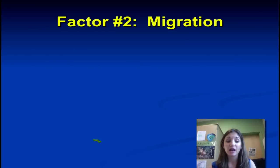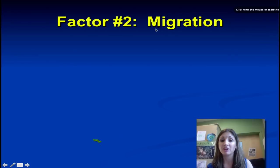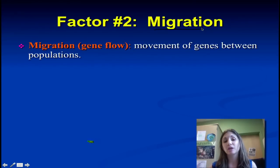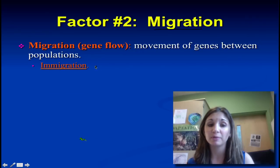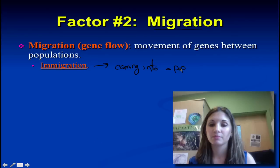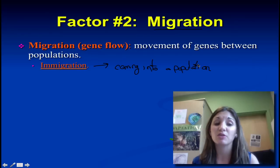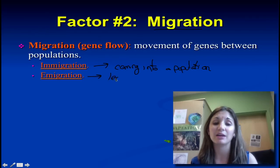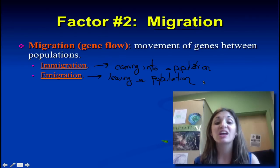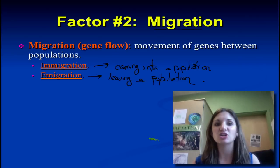The second factor that can affect a population and move it out of Hardy-Weinberg equilibrium is migration — really talking about gene flow, the movement of genes between populations. We have to talk about immigration, which is organisms coming into a population, and emigration, which is leaving a population. As organisms enter and leave a population, they're carrying with them their genes, and that allows us to mix. Migration does tend to homogenize populations.